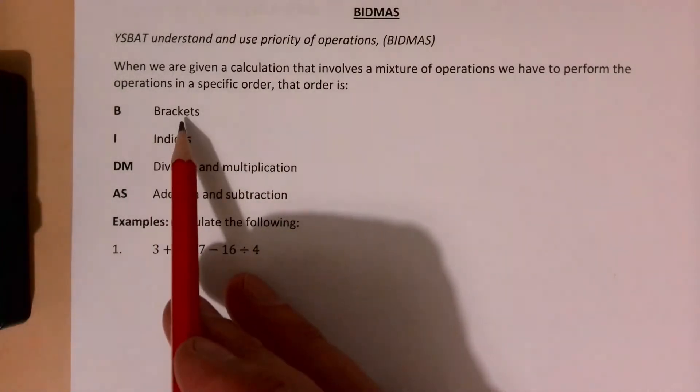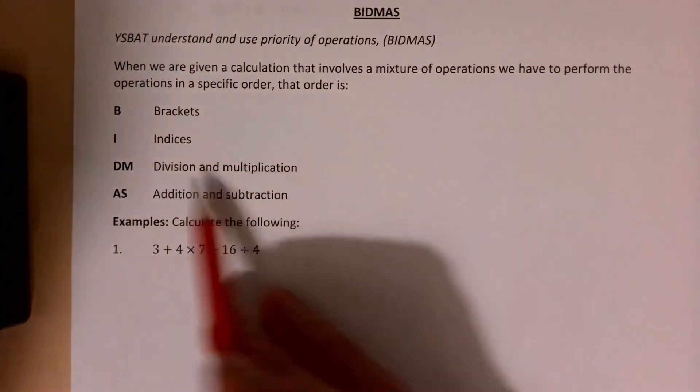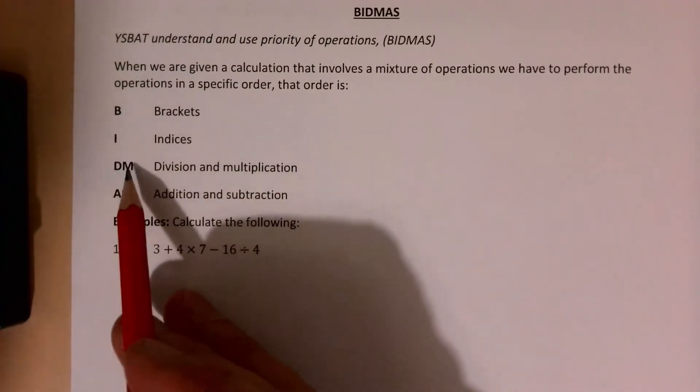That order is we do brackets first, then we do indices, then division and multiplication come together, and addition and subtraction. So that's where the BIDMAS comes from: B-I-D-M-A-S.